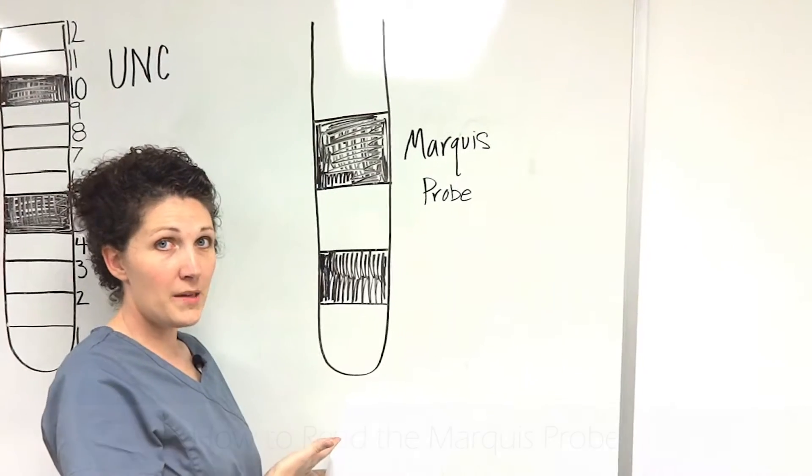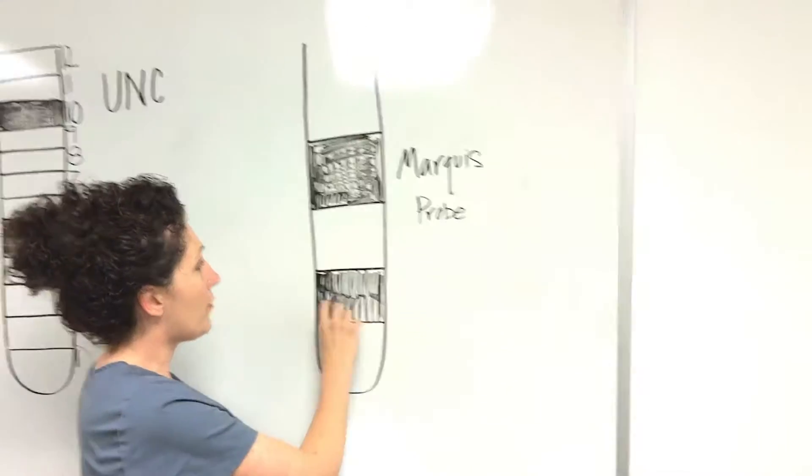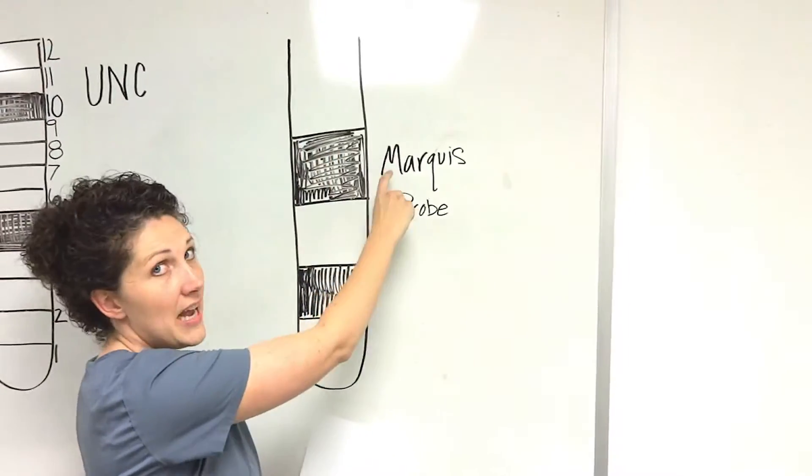I'm going to show you today how to read the marquee probe. It has markings at 3, 6, and 9.